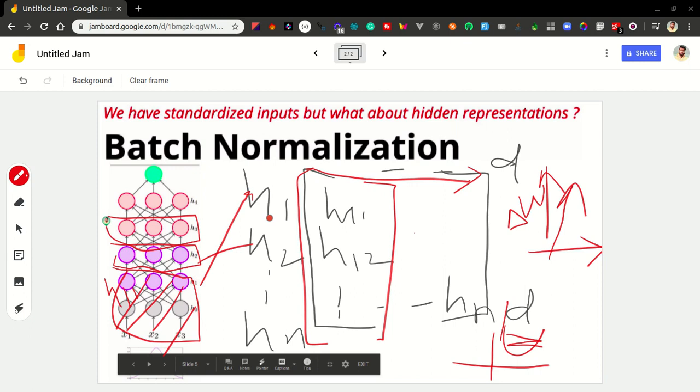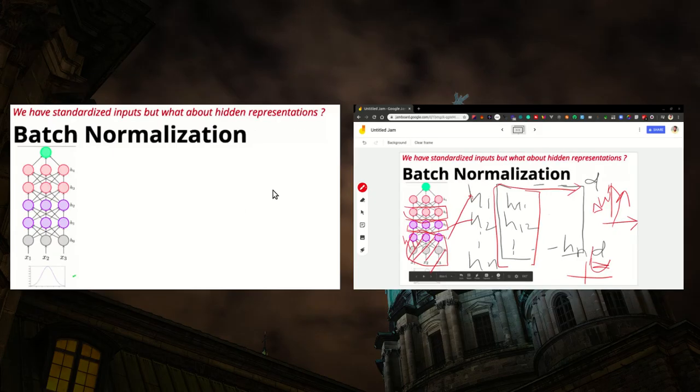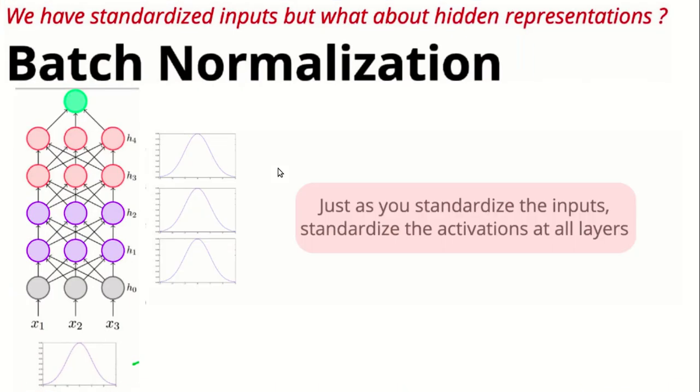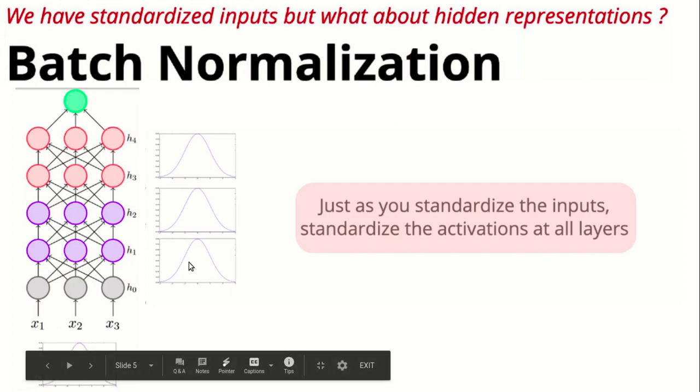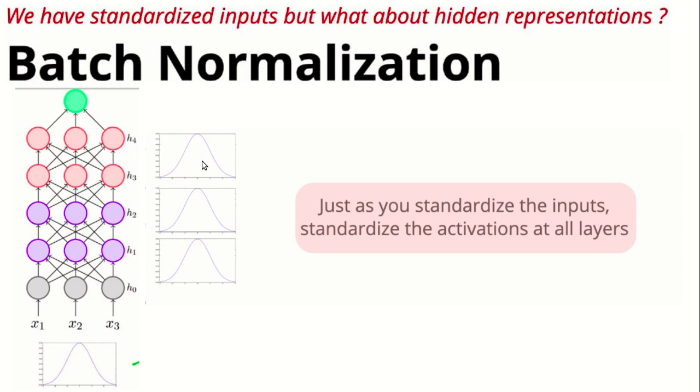That's the main reason to do batch normalization. Just as you standardize the input, standardize the activations at all layers also. That's why we have this input layer and we standardized all the hidden layers also.